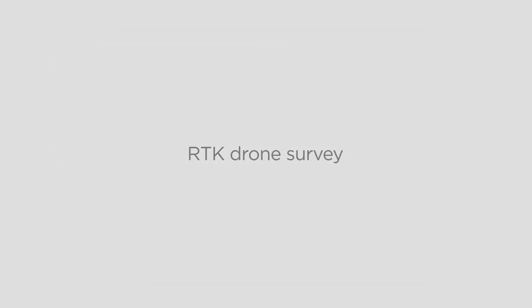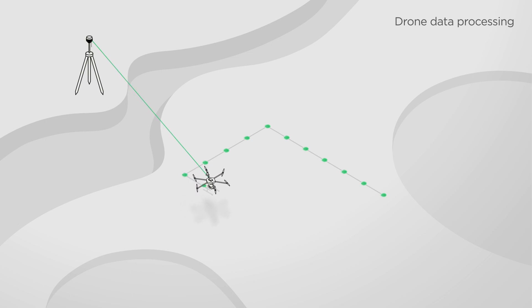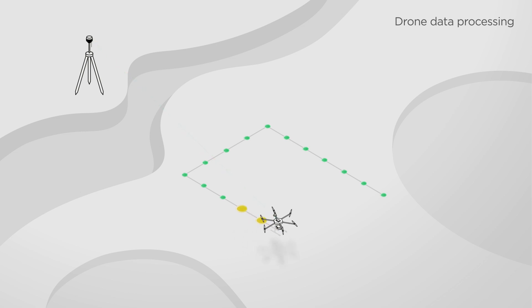Now let's proceed with the RTK drone surveying workflow, which allows you to update photos from your RTK drone with precise coordinates. Usually there's no need for that, but sometimes during the flight it's not possible to maintain a proper RTK connection between the drone and the base. As a result, some photos are taken in the float or even single solution and require post-processing.